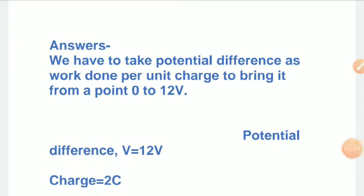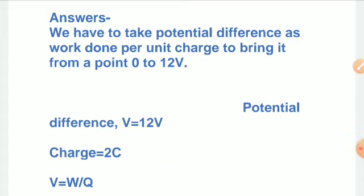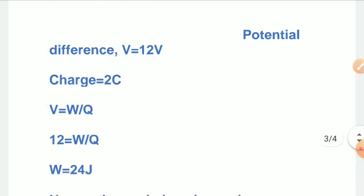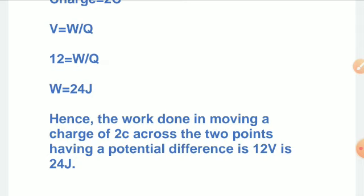We take potential difference as work done per unit charge to bring it from 0 to 12 volts. Potential difference V equals 12 volts, charge Q equals 2 coulombs. Using the formula V equals W by Q: 12 equals W divided by 2, so W equals 24 joules. Hence the work done in moving a charge of 2 coulombs across two points having a potential difference of 12 volts is 24 joules. Similarly, if potential difference is asked and work done is given, put values accordingly.